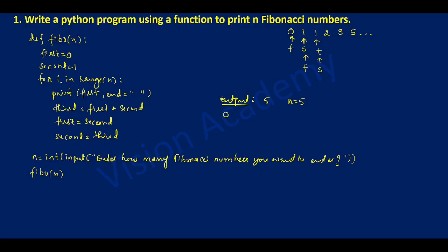Control jumps back to the for loop, incrementing i by one. Earlier i was zero, now it is one, which is less than five, so the condition is true again. It prints first — first is now one, so it prints one. Then third equals first plus second: one plus one equals two, so two is third. First is set equal to second, and third becomes the new second.